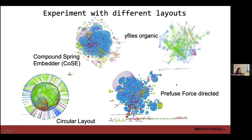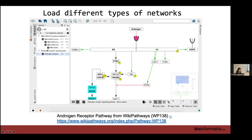Here are some examples of different layouts — by default the prefuse force-directed layout. This is actually a subsection I've zoomed into. There's also a circular layout. Within Cytoscape there are actually different types of networks you can load in. This is an example from WikiPathways — within a pathway there's often a flow. You can import it as a pathway or as a network. It works very nicely as a pathway, but you can't use any Cytoscape layouts when represented as a pathway because you'd lose the flow.